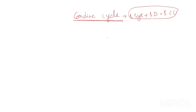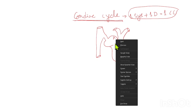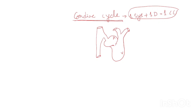Before discussing the different phases of cardiac cycle, let us try to draw the heart chamber. This is the right side of the heart. We have the pulmonary artery, superior vena cava and inferior vena cava, the atrium and the ventricle. We have the AV valve and the semilunar valve.